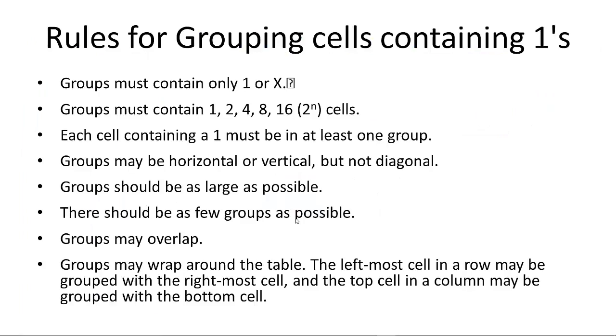Let's look at the rules for grouping cells containing 1s. Groups must contain only 1 or x. X means don't care—I don't care what the output is for those inputs. You can draw a rectangle around anything that's a 1 or an x, but no 0s. Next rule: Groups must contain 1, 2, 4, 8, or 16, that is 2 to the n cells. We're not drawing rectangles around 6 cells or 3 cells. Each cell containing a 1 must be in at least one group.